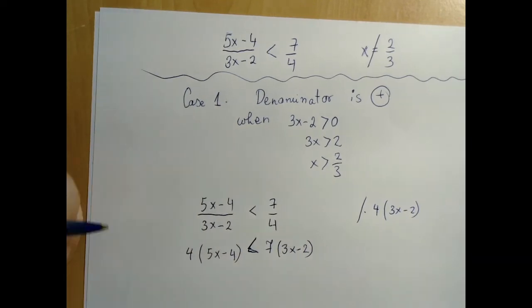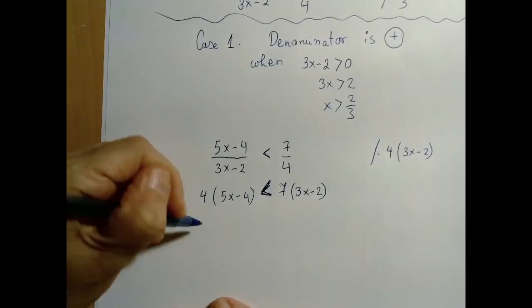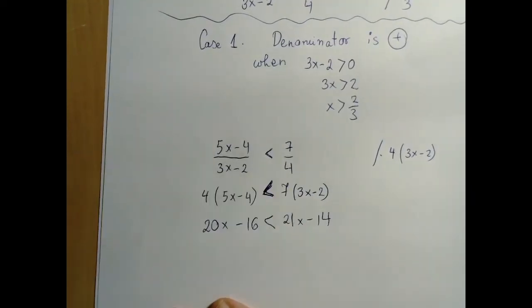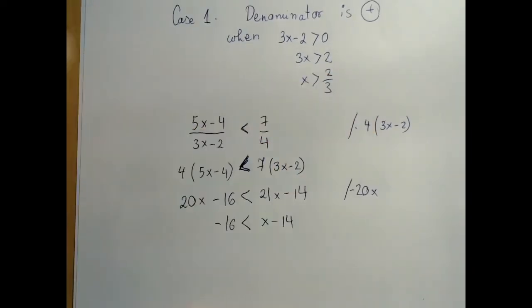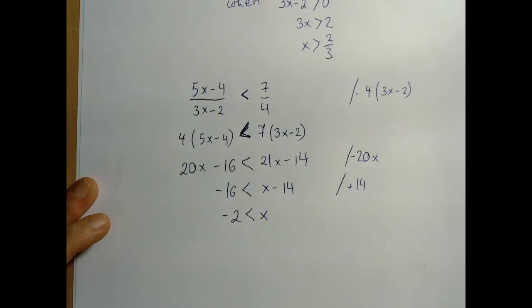The 3x minus 2 cancels, we are left with the 4, and here the 4 cancels out, and we are left with the 3x minus 2. And now we are on solid ground, so to speak. We know how to solve the inequality. We distribute on both sides. Then we are going to subtract 20x, and add 14. So what did we get? Notice that all the computations are easy. What might be the most difficult thing is coordinating all these little computations.